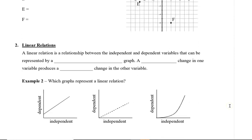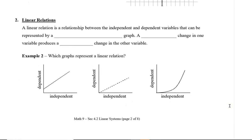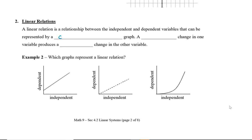Next, let's take a look at linear relations. A linear relation is a relationship between the independent and the dependent variables that can be represented by a Cartesian coordinate graph — that just means we can draw a line on a Cartesian plane. A constant change in one variable produces a constant change in the other variable. When x changes consistently, that also produces a constant change in y, so when we draw the graph we should get a line.